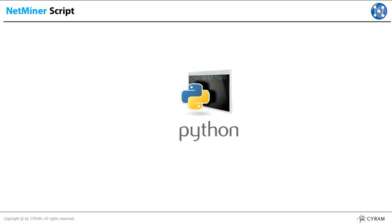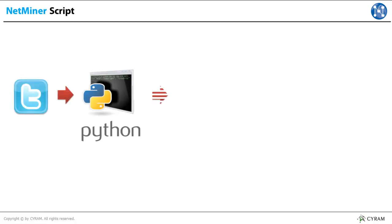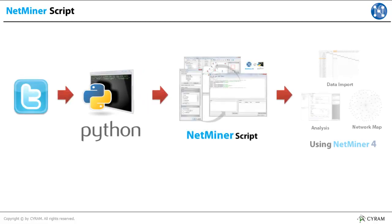Another advantage of Netminer script is that users can use a Python library. Many people around the world have uploaded many different kinds of Python libraries in various fields and areas, and on the internet you can download library files easily. Among those various kinds of fields, this time let's choose Twitter and collect follow network data with Netminer script that is made through Python library.